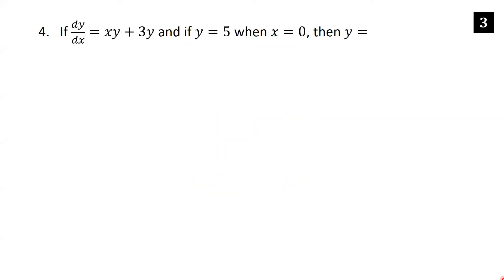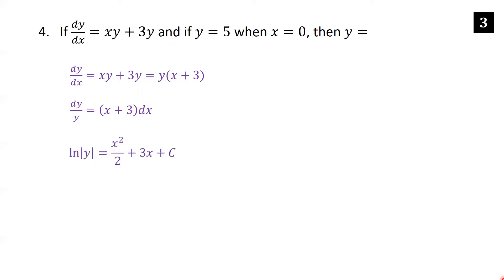If dy/dx equals xy plus 3y, and y equals 5 when x equals 0, then y equals... We're going to separate variables, but first we factor the right-hand side: factor out a y to get y times x plus 3. Now we separate by dividing by y and multiplying by dx: dy over y equals x plus 3 times dx. Now we integrate each side. The integral of dy over y is ln absolute y; the integral of x is x squared over 2; the integral of 3 is 3x. Don't forget to add the arbitrary constant c.